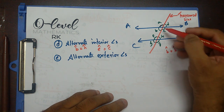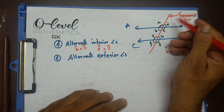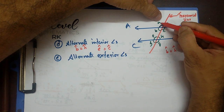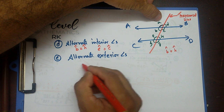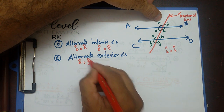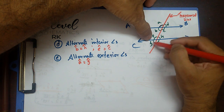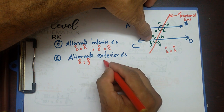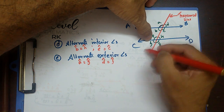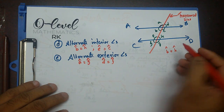Alternate exterior angles are also on opposite sides of the transversal line, but outside the parallel lines. Angle A equals angle G, and angle D equals angle F — these are alternate exterior angles.